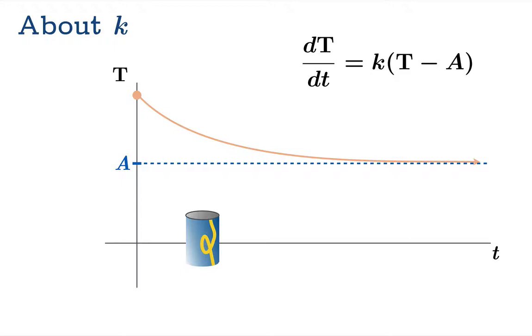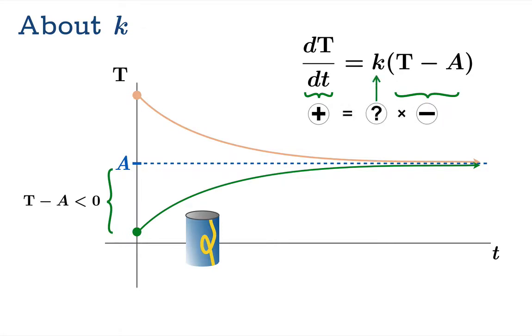Let's imagine now that we pull a cold object out of the refrigerator. The temperature of that object now starts lower than the ambient temperature, and we would expect the temperature to rise as it warms up to the ambient temperature. This means that the derivative of temperature with respect to time should be positive. In this case, T minus A is going to be negative. And what does that say about k? Once again, it says that k has to be negative. So any way you slice it, we expect this constant in this differential equation to be a negative number.